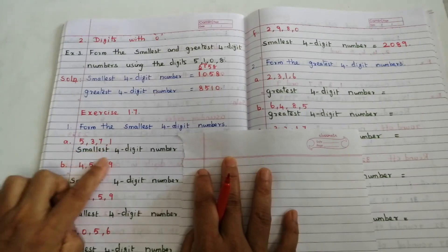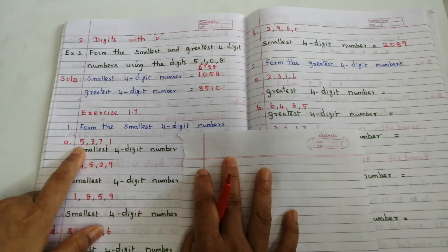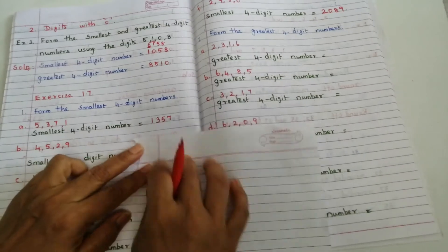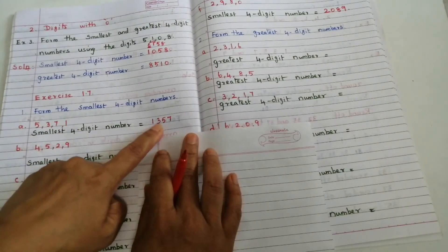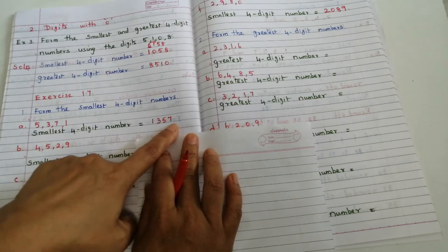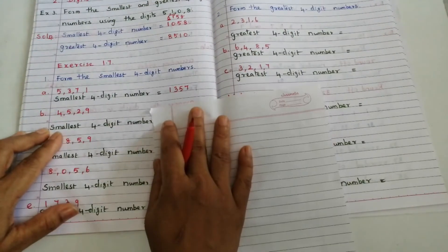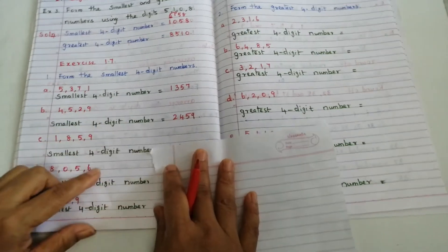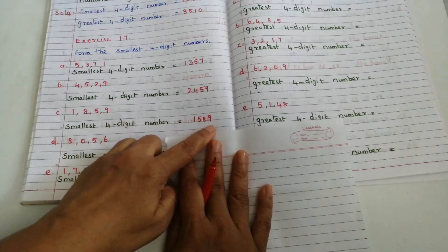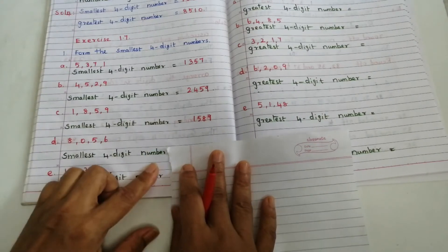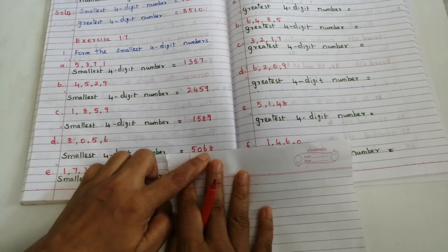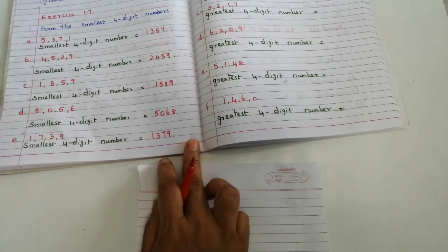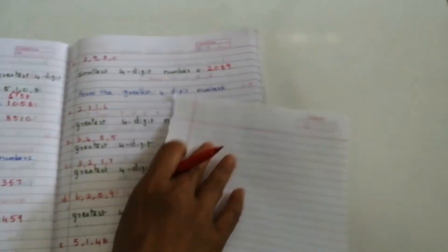For the smallest four-digit number, arrange in ascending order (small to big). Problem A: 1, 3, 5, 7. Problem B: 2, 4, 5, 9. Problem C: 1, 5, 5, 8 — answer is 1558. Problem D: 5, 0, 6, 8. Problem E: 1, 3, 7, 9. Problem F: 2, 0, 8, 9.